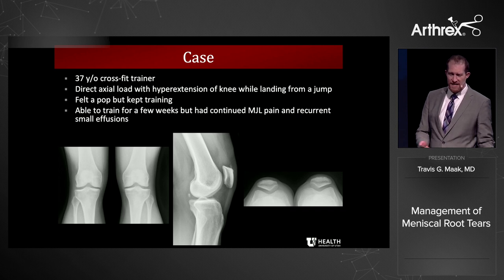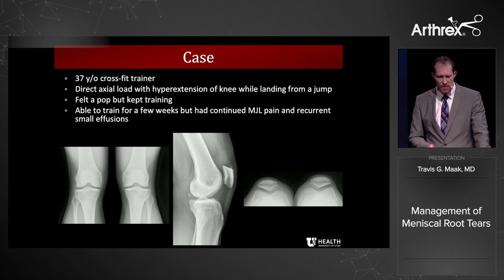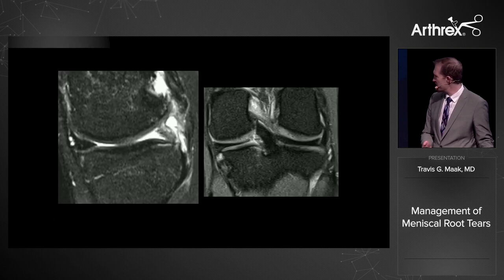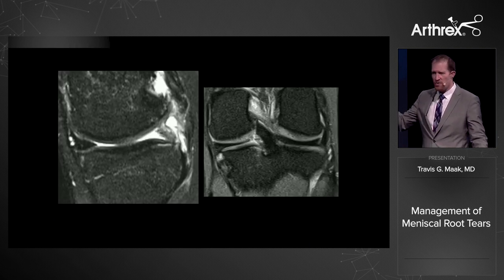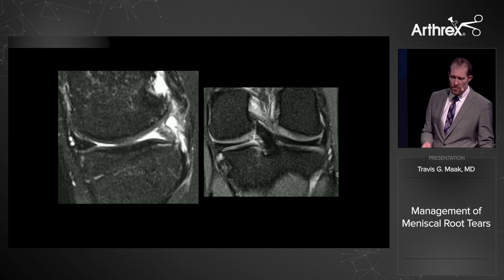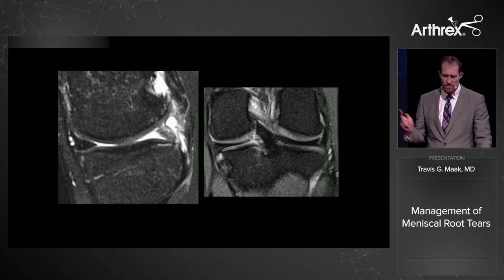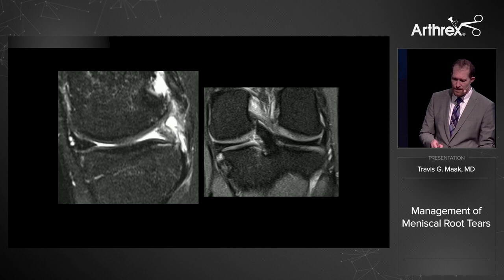This is a patient of mine — a 37-year-old female CrossFit trainer. She had a direct axial load with hyperextension of her knee and was able to train but had continued medial joint line pain. Here you see the 'go sign' — a complete medial root tear. This individual is not morbidly obese; she's a very high-level athlete and fitness trainer, so this is a very significant issue.